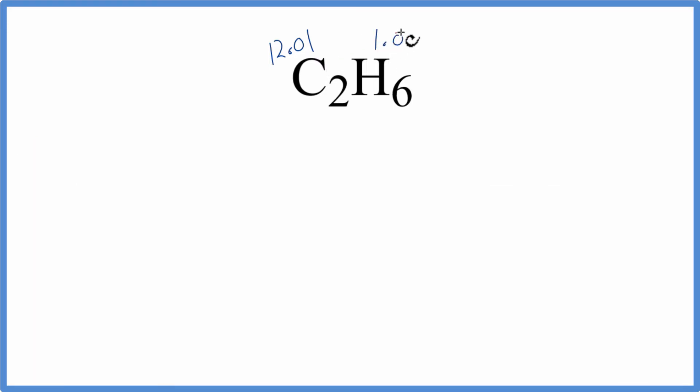Hydrogen is 1.01 grams per mole. So we have 12.01, and we have two carbon atoms, so we'll multiply by two. Then we'll add hydrogen, 1.01. We have six hydrogens.